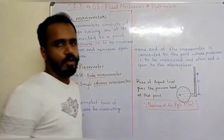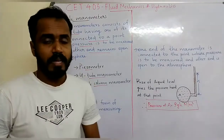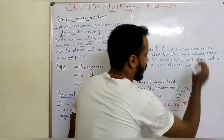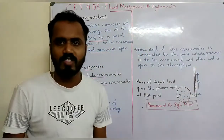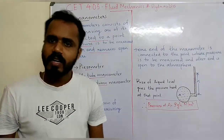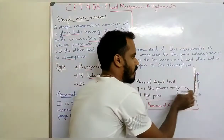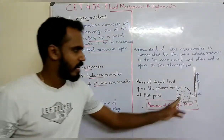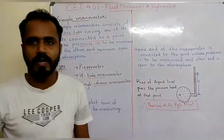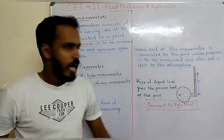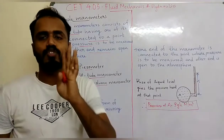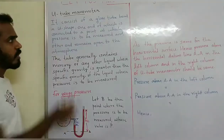In the piezometer glass tube, we have a height H. The pressure is calculated from that height, giving P equals rho g h Newtons per meter squared.